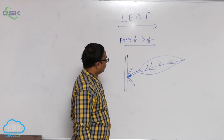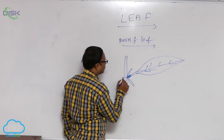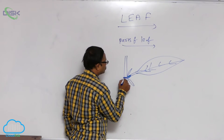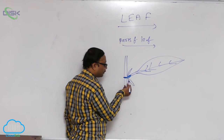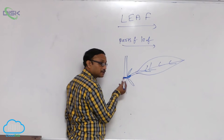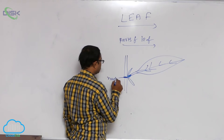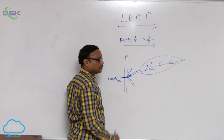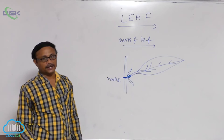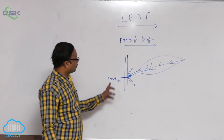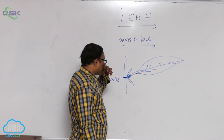Generally, leaves are formed on the stem at the nodes. Leaves arise at which place on the stem? At the nodes. It means leaves arise at the nodes on the stem.